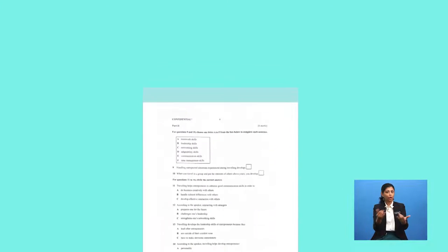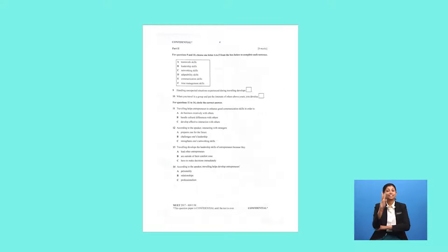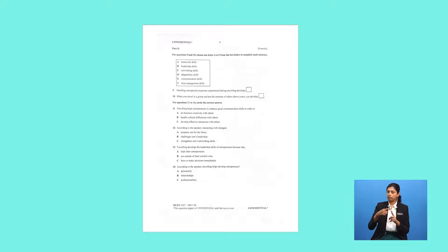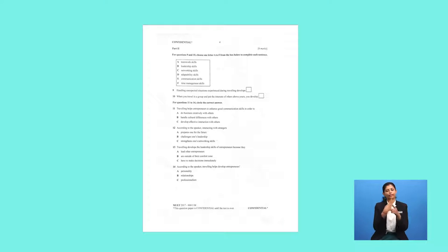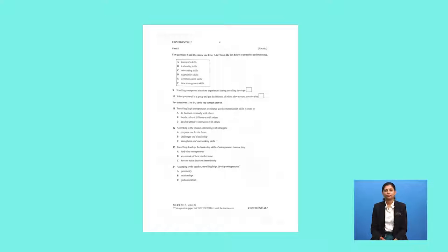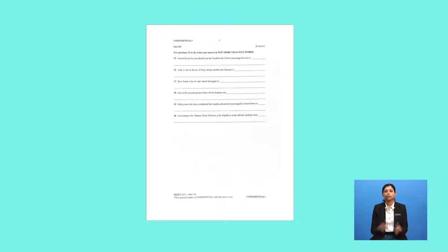Part two has six questions, and they're all multiple-choice questions ranging from three options to six options given. This may be the easiest part of the paper because all the answers are there — you just need to choose the best option. Then comes part three.